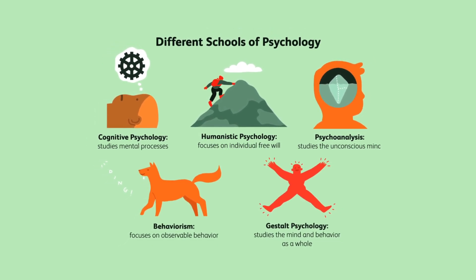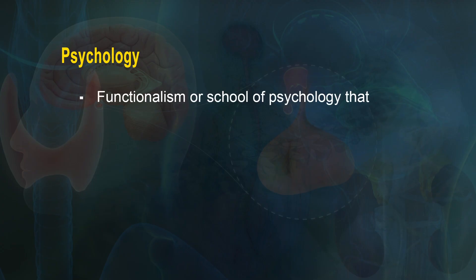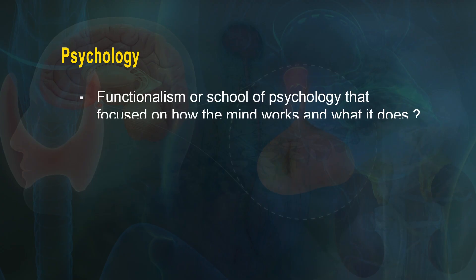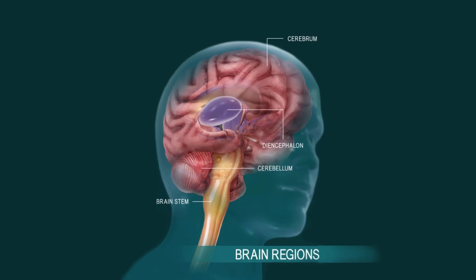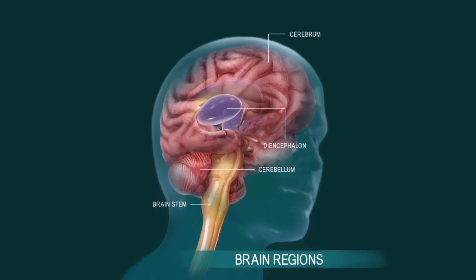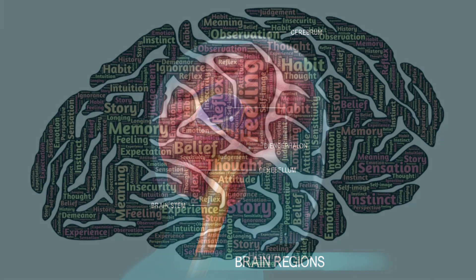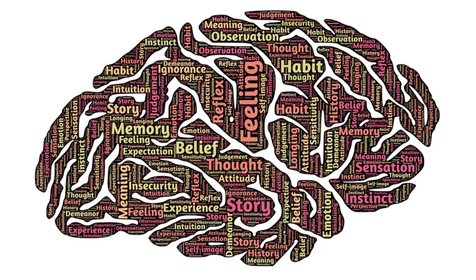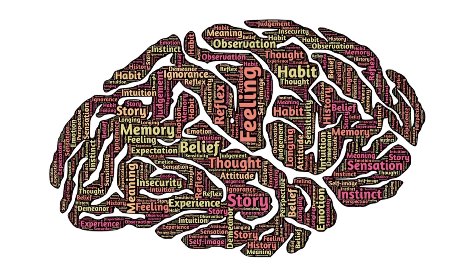One of the prominent schools of psychology is functionalism, a school of psychology that focused on how the mind works and what it does. This allowed the newly emerging field to focus on the structure and function of the brain and how it affects our behavior. Though functionalism was later rejected, it allowed for further growth and development.